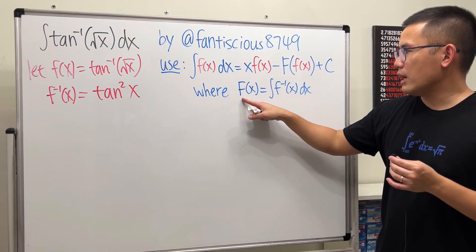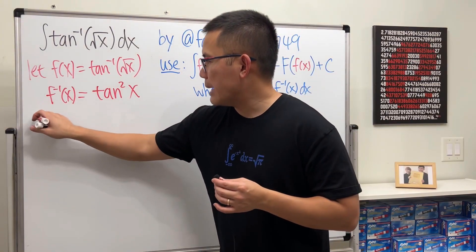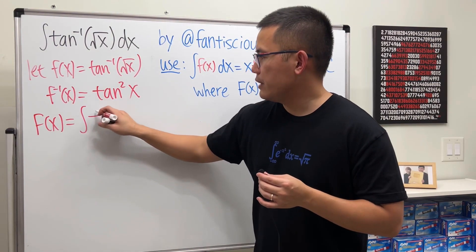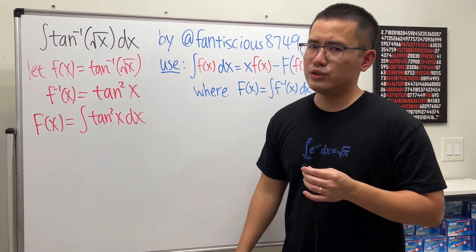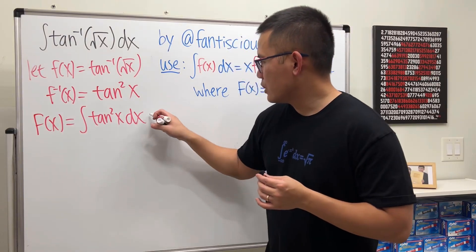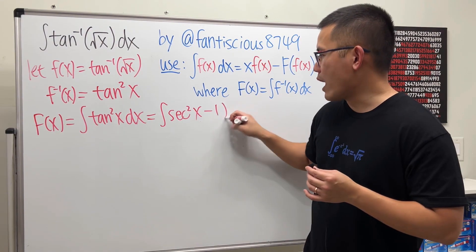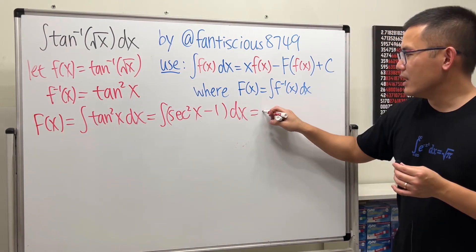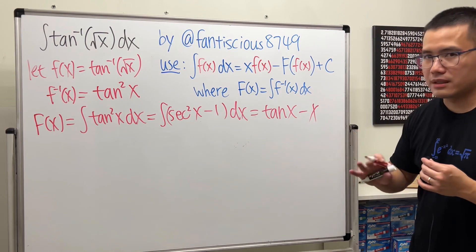Right here, we need to figure out capital F, and that's just the derivative for that. So capital F is just going to be the integral of tangent squared x dx. And to integrate tangent squared x, we can just say that's the same as secant squared x minus 1. And that will give us tangent x, and that will give us minus x.